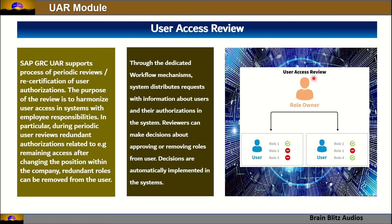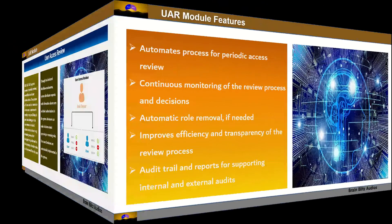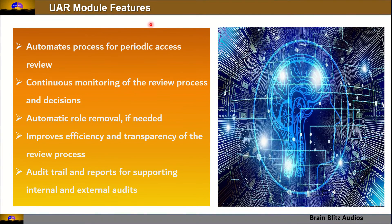In the UAR workflow, the role owner can change the roles assigned to every user — for example, one user may have only Role 1, while another has access to both Role 1 and Role 4. The features of the UAR module include: automated periodic access reviews, continuous monitoring of the review process and decisions, automatic role removal if needed, improved efficiency and transparency of the review process, and audit trails and reports supporting internal and external audits.